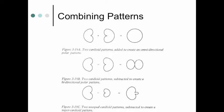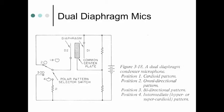So, you can combine two patterns and create a new one. Here's an example. Some of the very good microphones actually have two diaphragms inside so that you can combine them and create different polar patterns. Here's another example. Position one is cardioid. Position two is omni, bi-directional, and super cardioid. So, you can create whatever polar pattern you want using two diaphragms.